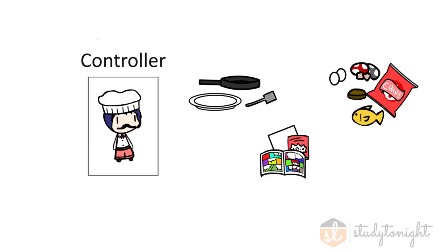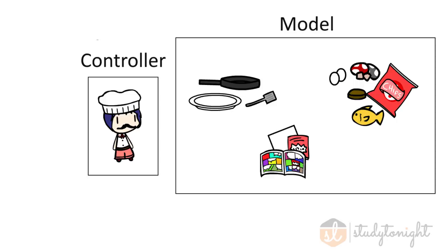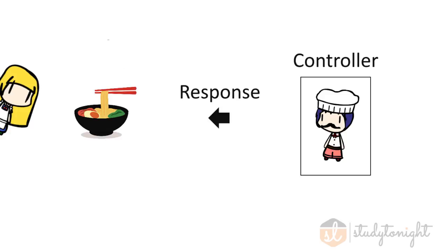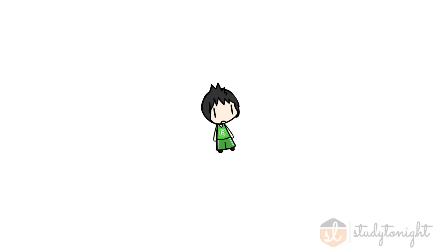The chef has access to utensils, recipes, and ingredients, which he uses to fulfill that request. These are what form the Model — the component that processes the request and sends out a proper response. The controller then takes that response and sends it back to the View for the end user.